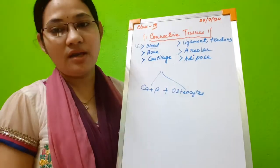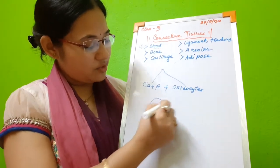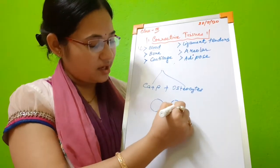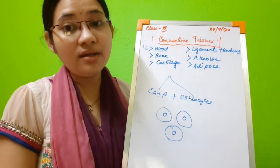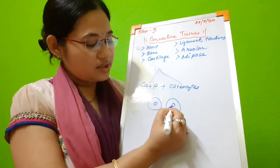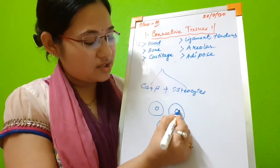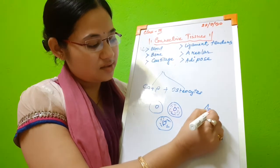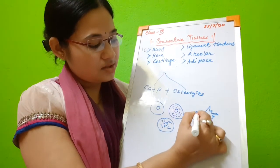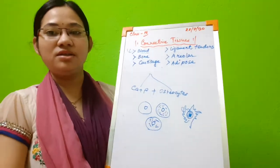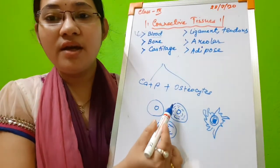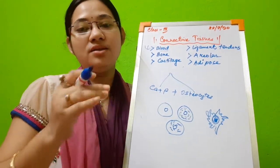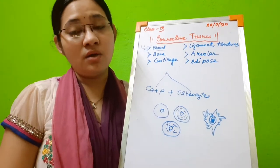Bones are made up of a matrix composed of calcium and phosphorus — that is why bones are so hard. The bone cells are called osteocytes, and these osteocytes are suspended in the hard matrix of calcium and phosphorus. There are Haversian canals, and in between them there are hollow spaces called canaliculi. The osteocytes are arranged in a concentric ring-like fashion around the canaliculi, through which veins, capillaries, and nerve tissues are present.